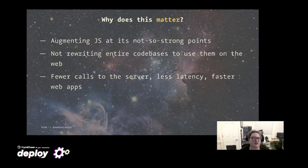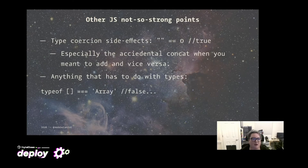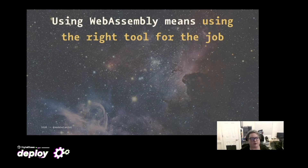This matters because it augments JavaScript at its not-so-strong points. It means not rewriting entire code bases to use them on the web, and it means fewer calls to the server, less latency, and faster web applications. Who wants to write a banking app in JavaScript? If you're running anything that relies on mathematical numerical accuracy or speed, that meant until now another Ajax call to have another language do all the math. With WebAssembly, we can do this in the browser with Rust or C++. WebAssembly means using the right tool for the job.